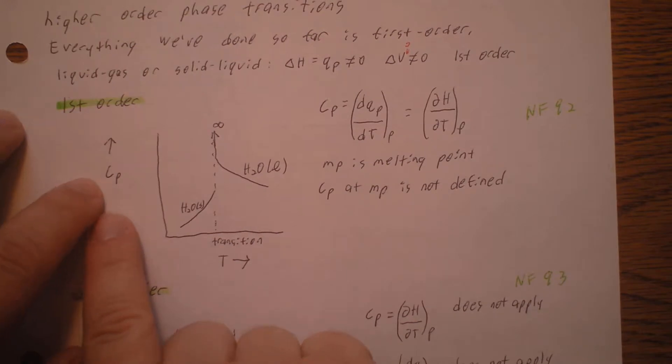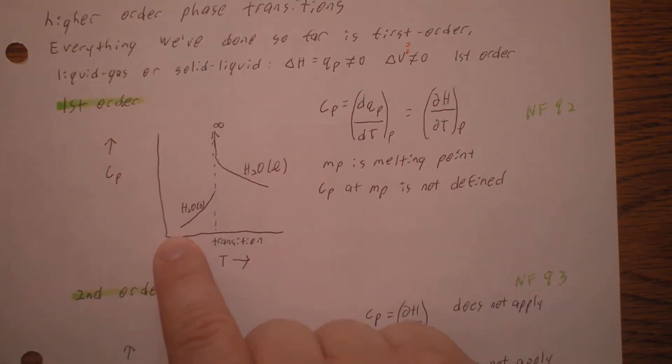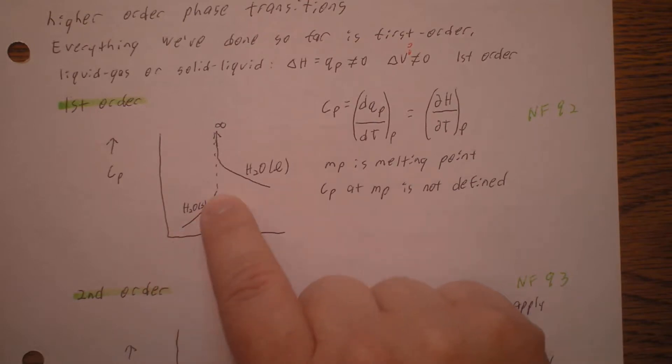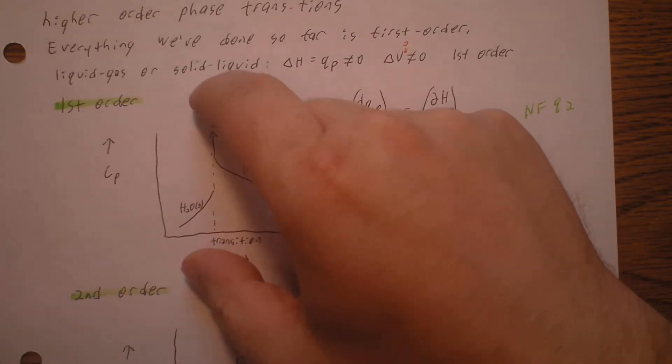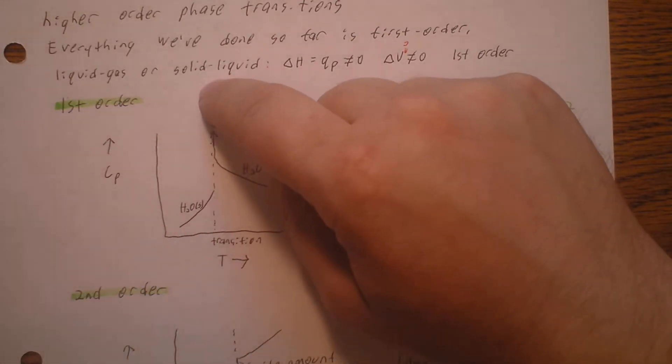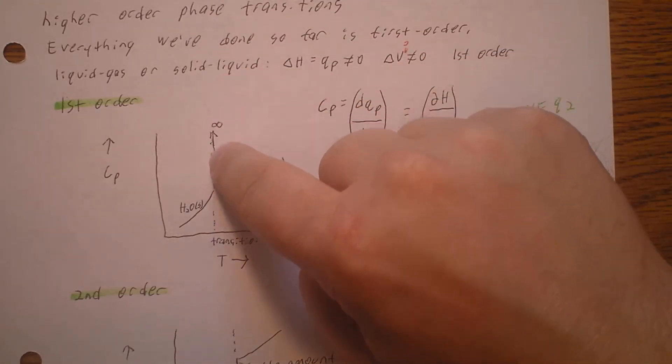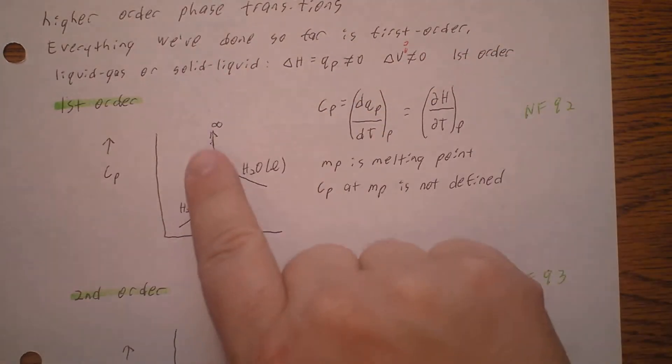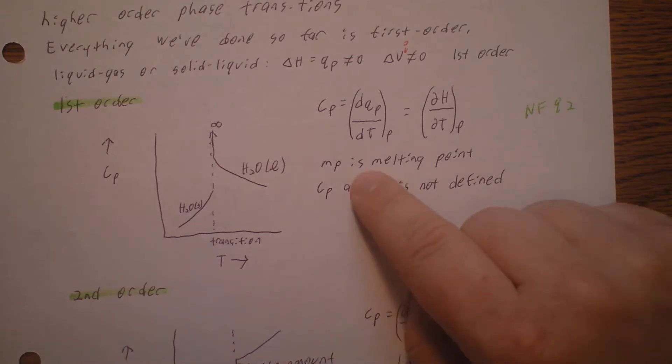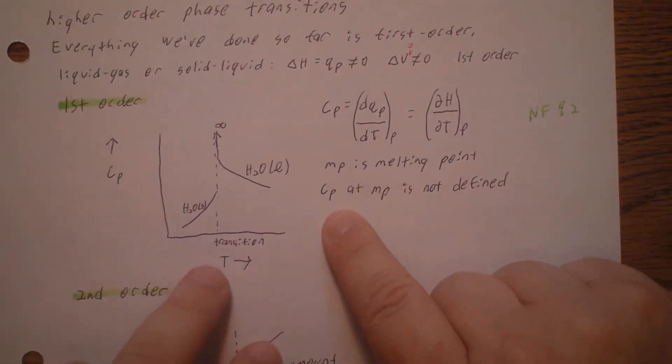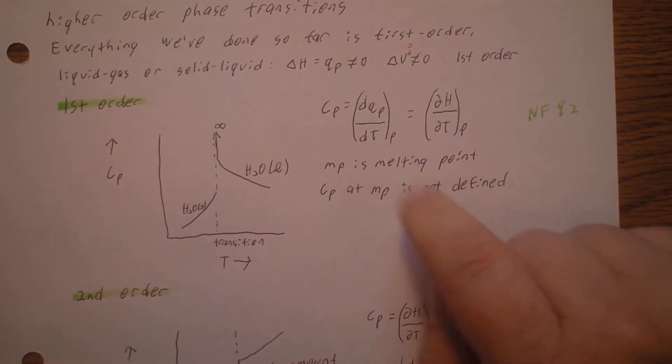Here's the heat capacity at constant pressure against temperature. As we're heating up solid water, we come up to the transition. Right at the transition, it's undefined, and then it comes back down from really, really high as it's a liquid. This is the melting point. The heat capacity right at the melting point is not defined.